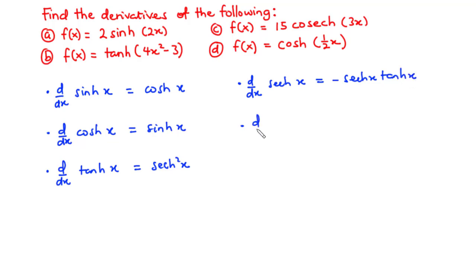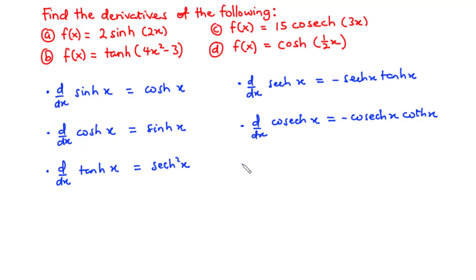The derivative of csch x with respect to x is equal to negative csch x coth x. And lastly, we have the derivative of coth x with respect to x equals negative csch squared x. So these are the derivatives of some basic hyperbolic functions.